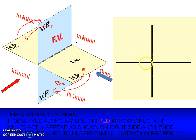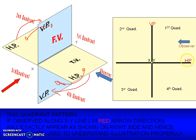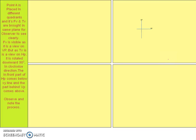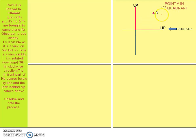Here we can see the four quadrants. This point denotes the XY line. This is the first quadrant, second quadrant, third quadrant, and fourth quadrant. The observer is looking from here and we can see all four quadrants, which are needed for drawing orthographic projections of points. When a point is in the first quadrant, the observer gets the front view on VP and the top view on HP. But we have to rotate HP downwards.